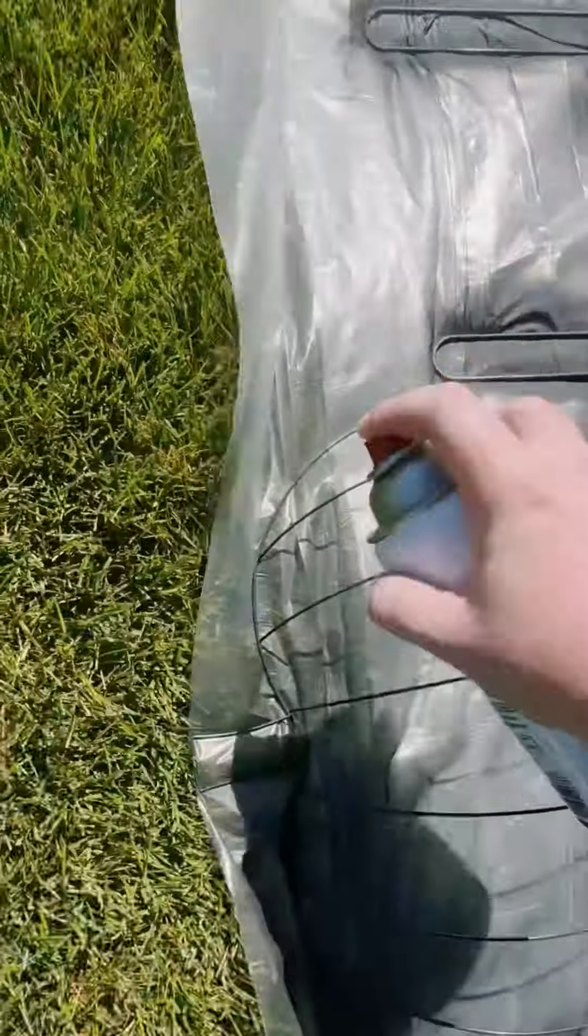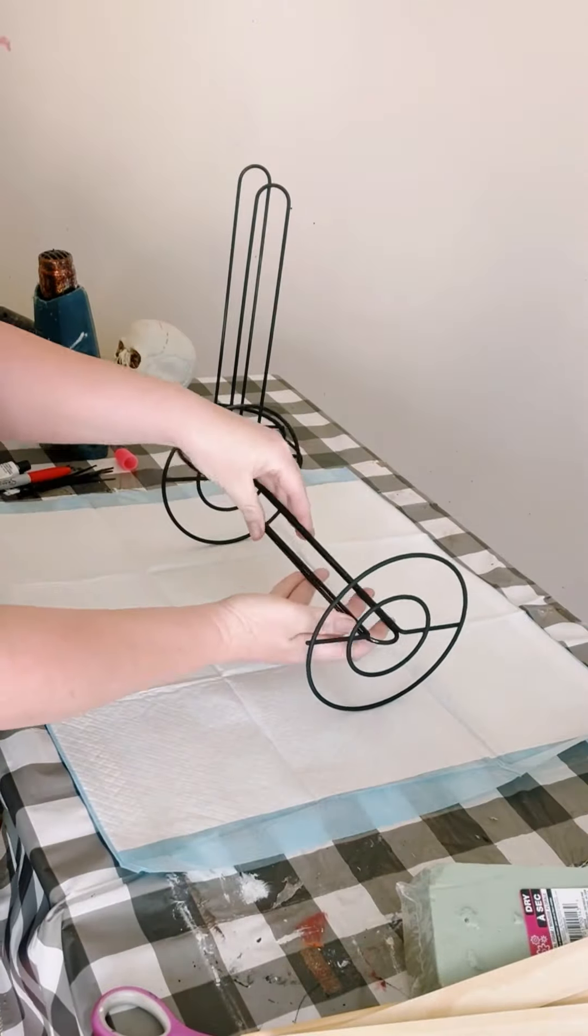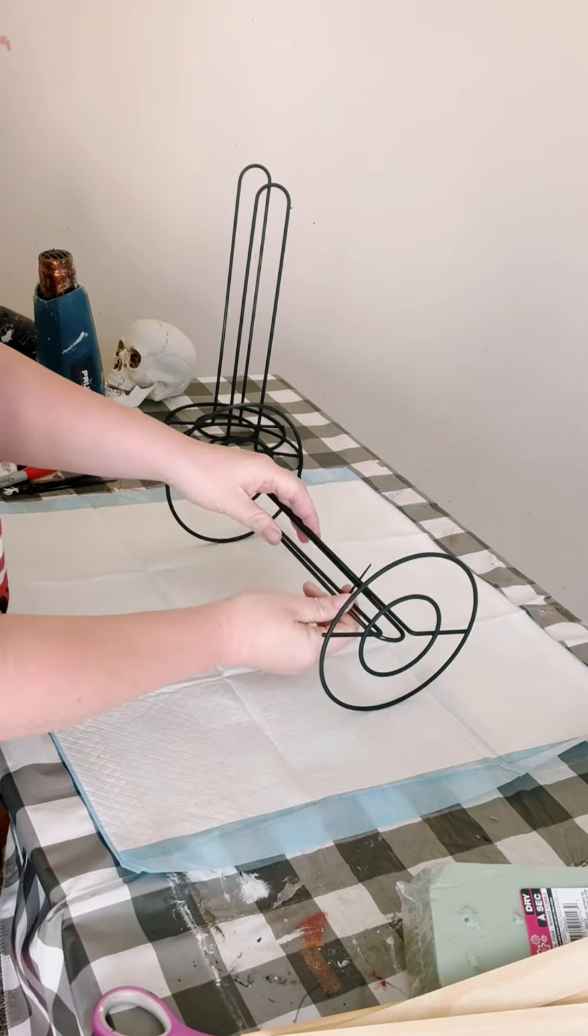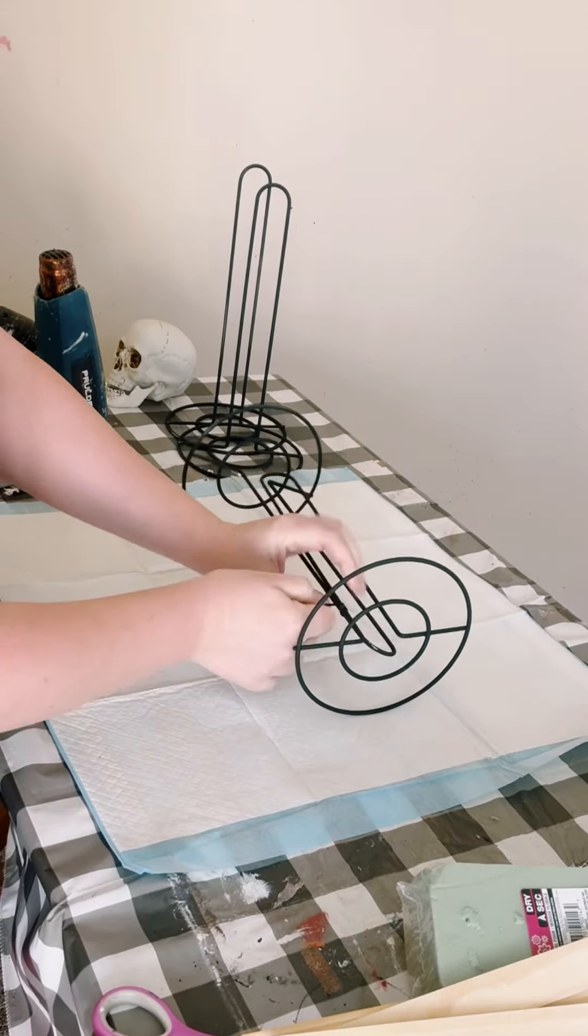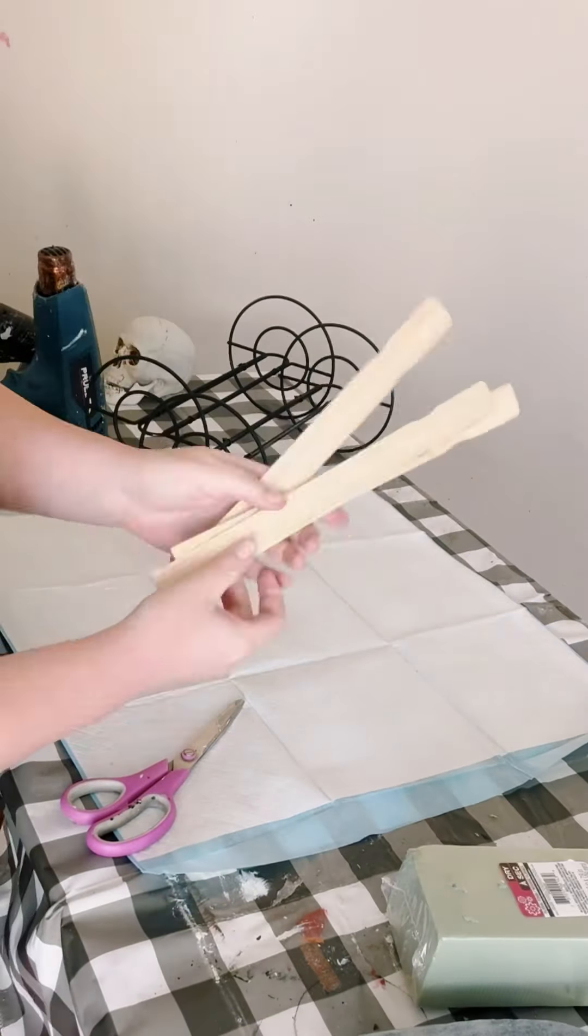Once everything is dry, you want to take two of those paper towel holders and you're going to zip tie those together, making sure the bottoms are faced outwards.